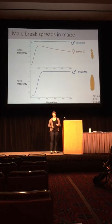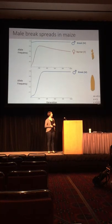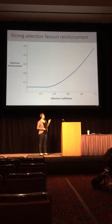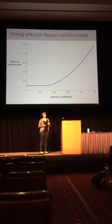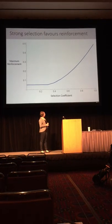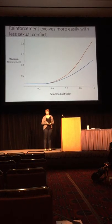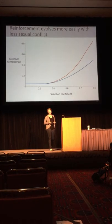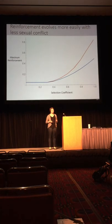We can track the maximum evolution of reinforcement across a range of selection coefficients. Intuitively, we see that increasing selection strength increases the amount of reinforcement that evolves. And importantly, when we compare this to a pre-mating barrier, we see that there is more reinforcement because males have less incentive to overcome the barrier.